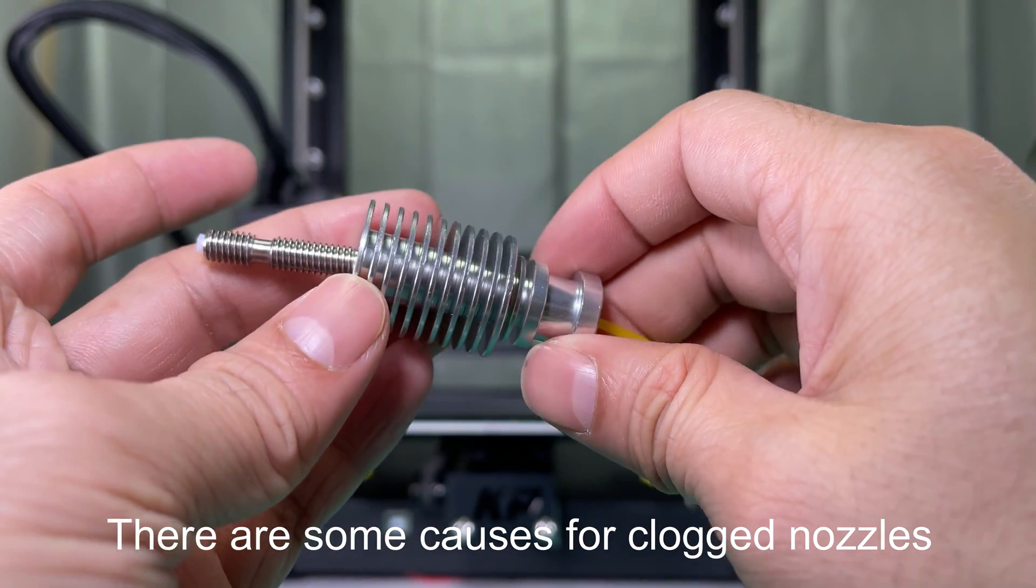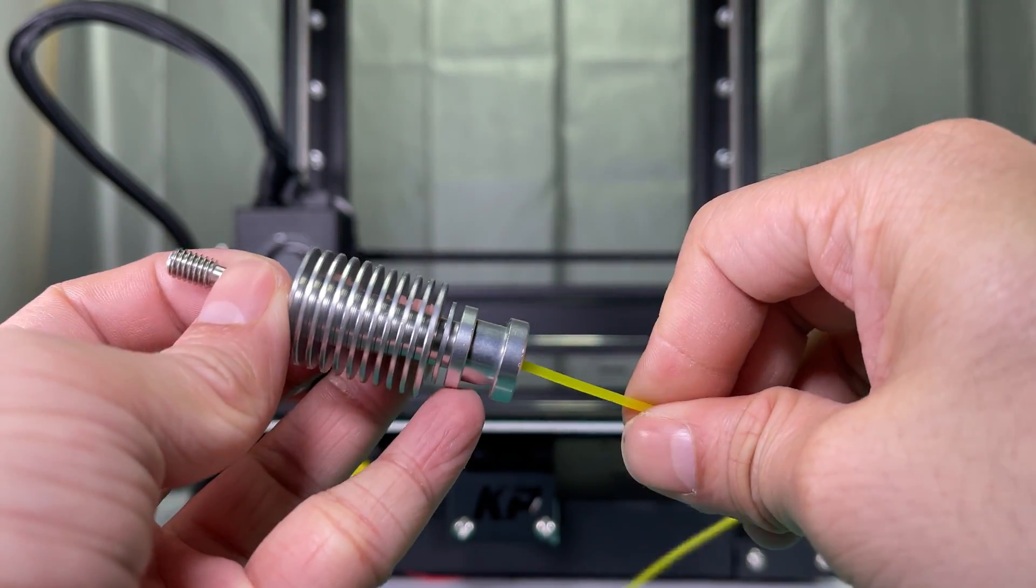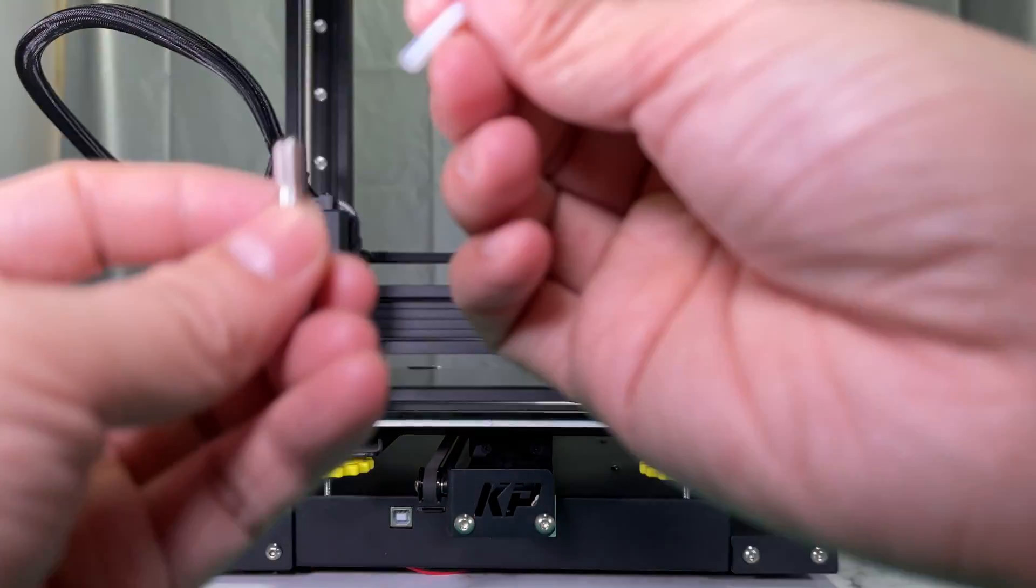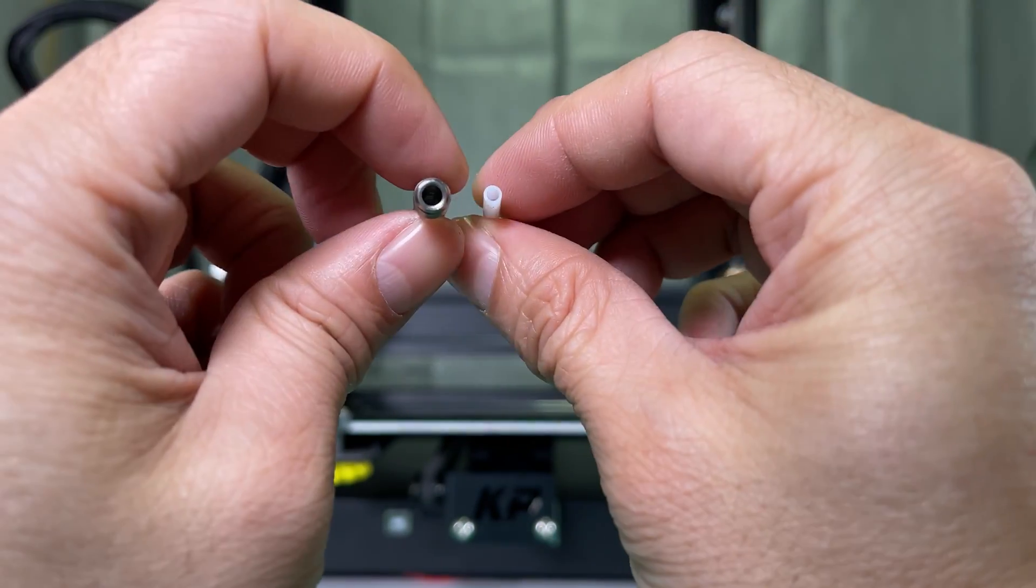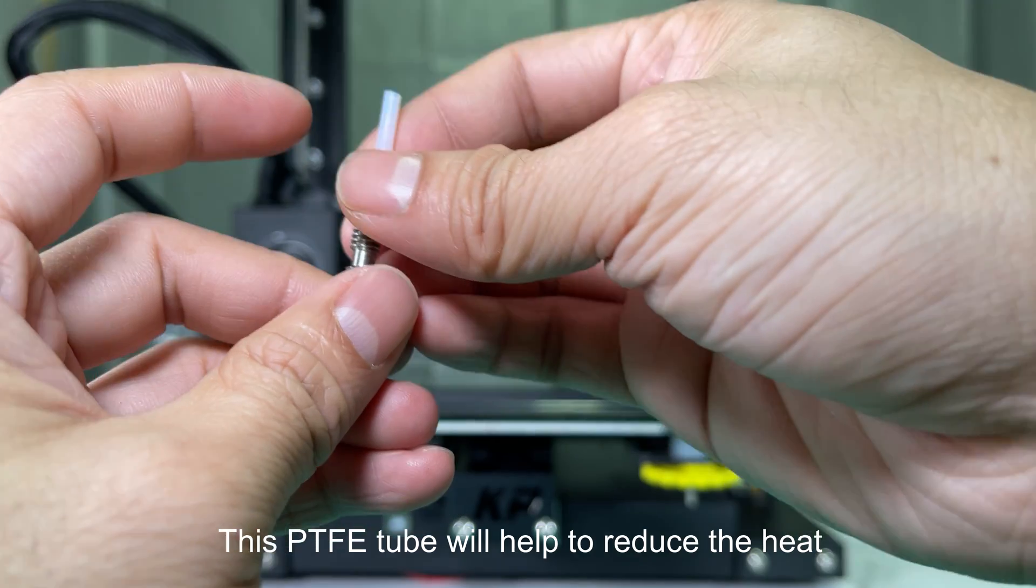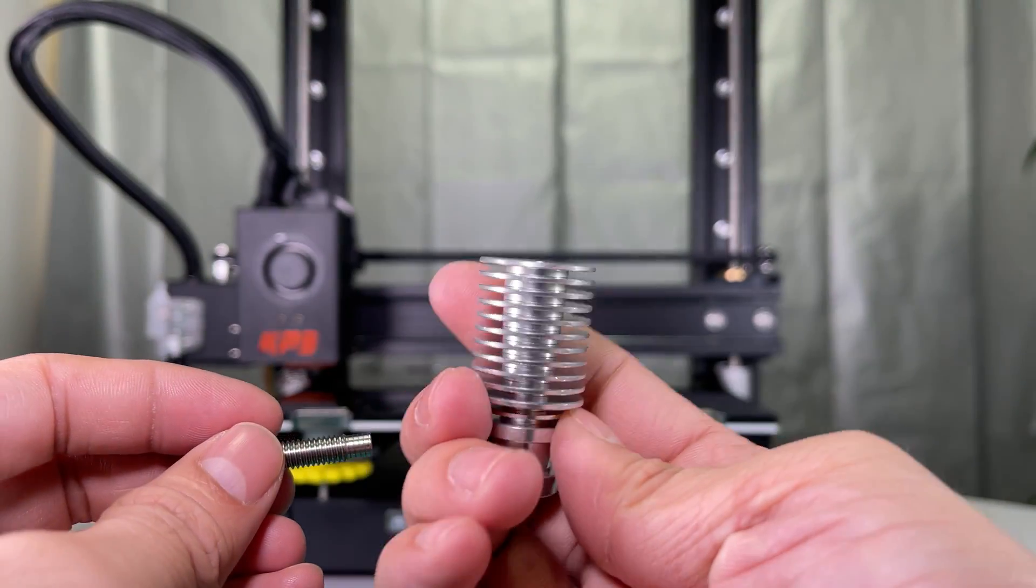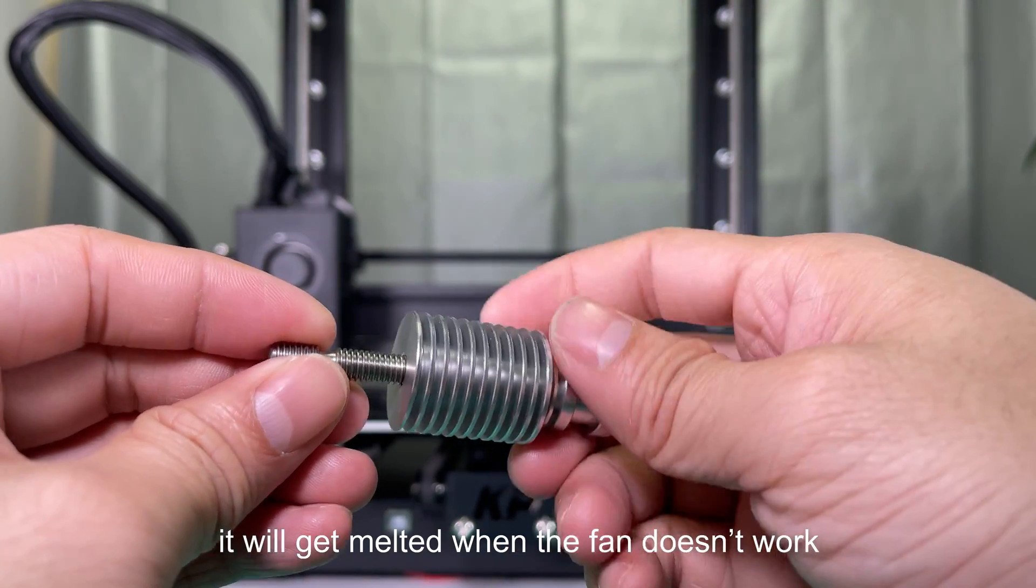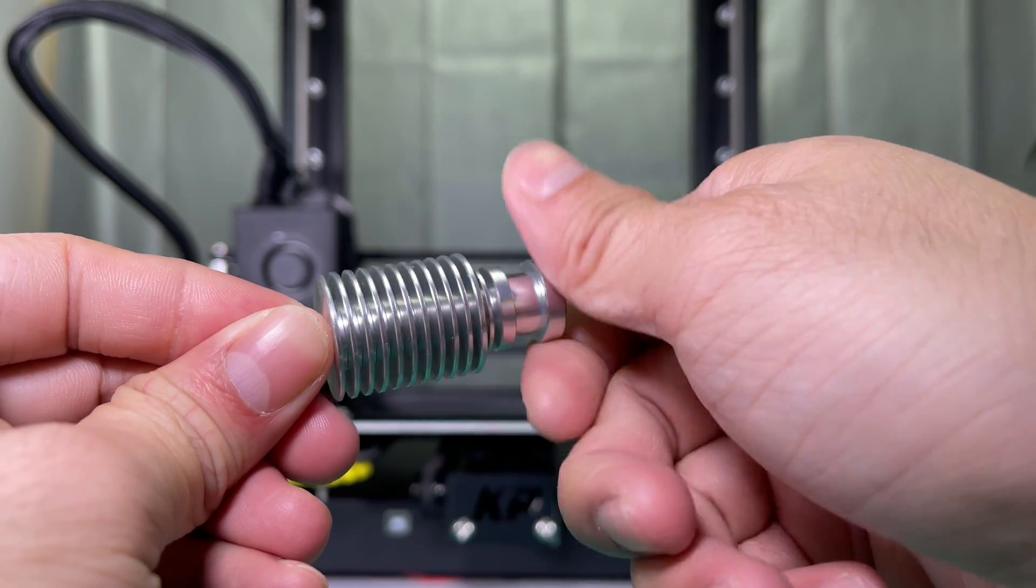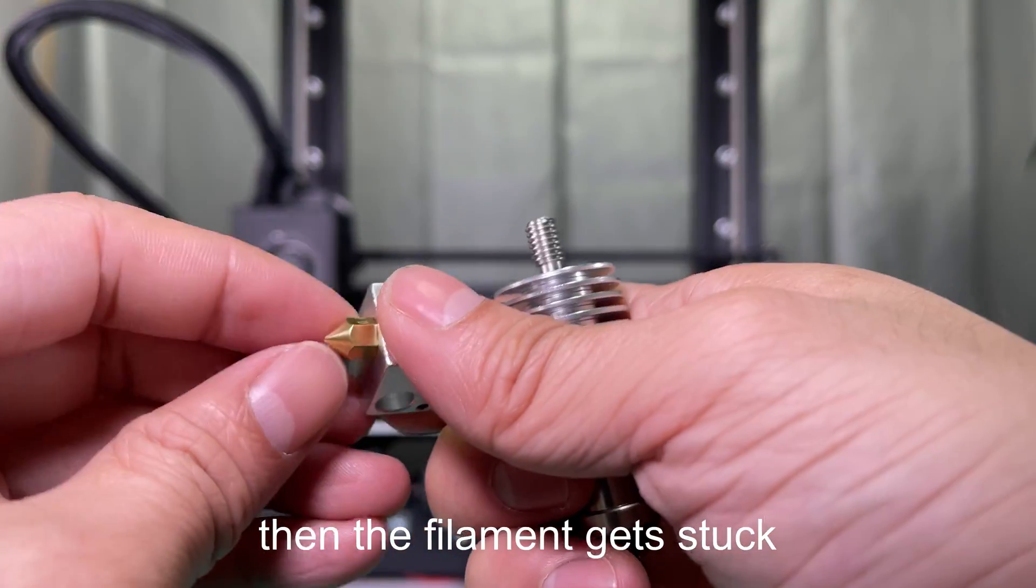There are some causes for clogged nozzles. First, the PTFE tube is clogged by the melted filament. This PTFE tube will help to reduce the heat. It will get melted when the fan doesn't work. Then the filament gets stuck.